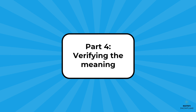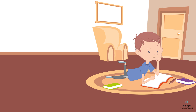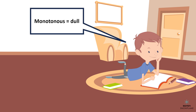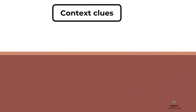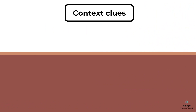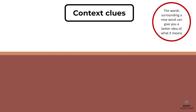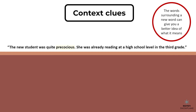Let's look at how to verify the preliminary determination of the meaning of a word or phrase. Let's say you've come across a new word and you've already made a preliminary determination by checking a dictionary or using context clues — now you want to make sure you've got it right. One way to verify the meaning is to look for more clues in the context it appears in. For example: 'The new student was quite precocious. She was already reading at a high school level in the third grade.' From the context, you might guess that precocious means something like smart or advanced.